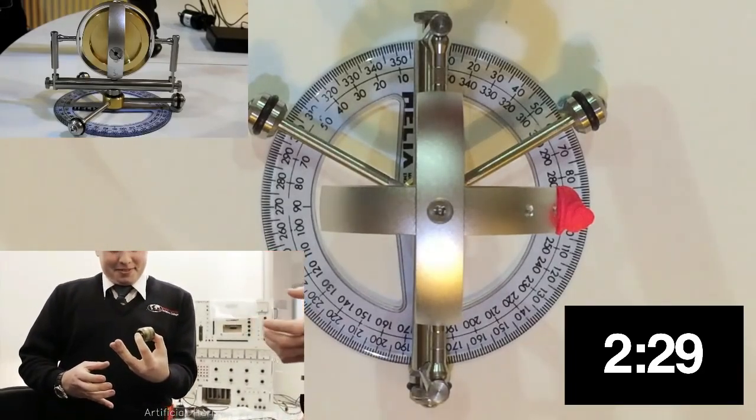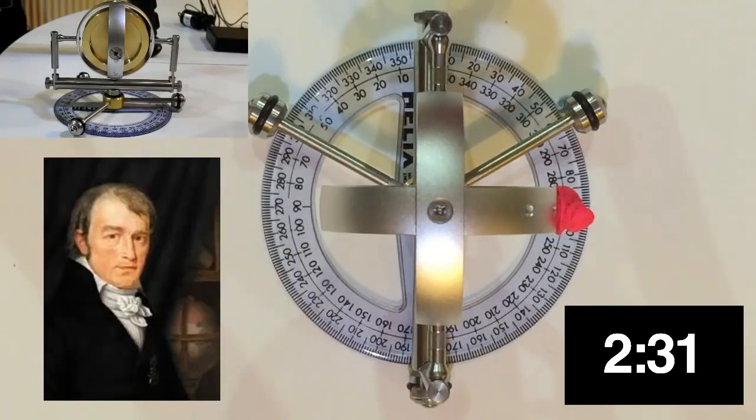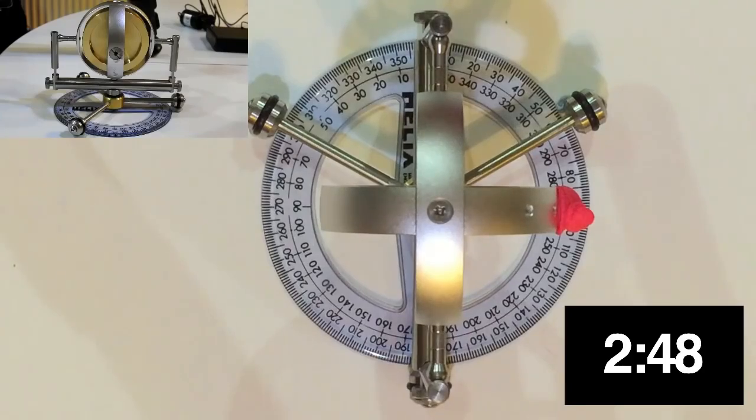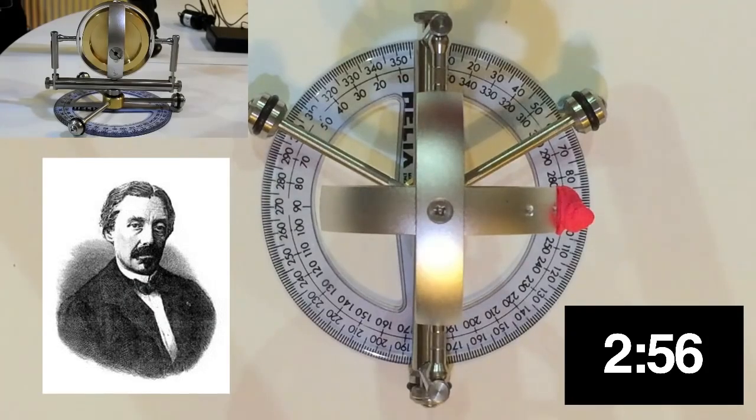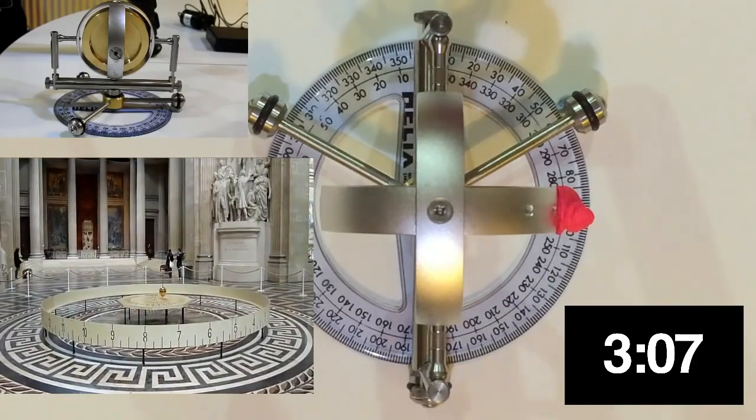The first modern gyroscope was designed in the early 1800s by Johann Gottlieb Friedrich von Bohnenberger, a professor at the University of Tubingen in Germany. It was made with a heavy ball instead of a wheel, but since it had no scientific application, it faded into history. In the mid-19th century, the spinning top acquired the name gyroscope, though not through its use as a navigational tool.